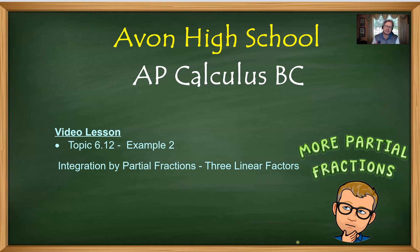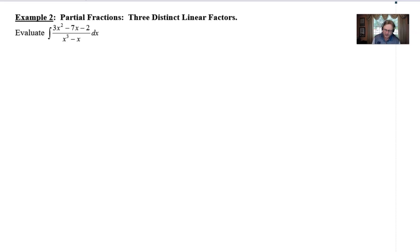We're just going to expand that idea a little bit. As you can see from the title, we're going to look at a fraction with three distinct linear factors. We're integrating in problem number two, 3x² - 7x - 2, all divided by x³ - x.